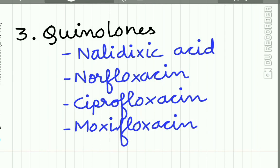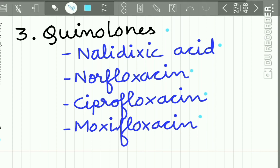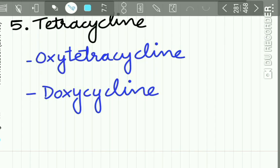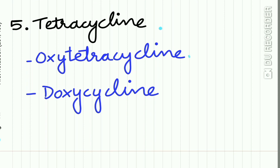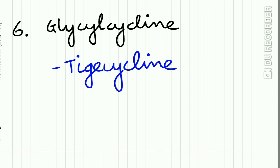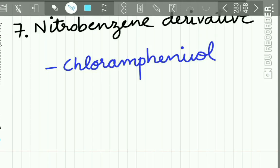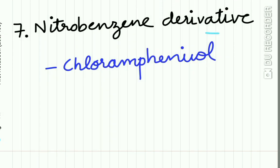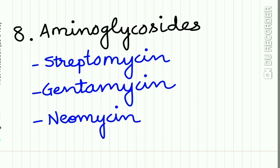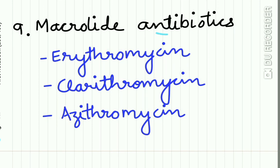The third category is quinolones, which include nalidixic acid, norfloxacin, ciprofloxacin, and moxifloxacin. The fourth group is beta-lactam antibiotics, which include penicillin, cephalosporin, monobactam, and carbapenems. The fifth group is tetracyclines, which include oxytetracycline. The sixth group is glycylcyclines, which include tigecycline. The seventh group is nitrobenzene derivatives, which include chloramphenicol. The eighth group is aminoglycosides, which include streptomycin, gentamicin, and neomycin.